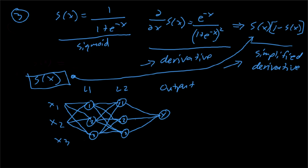So that's the derivation of the sigmoid function, the simplification to the format you typically see in neural networks and machine learning, and exactly why we use the simplified version over the standard derivative. Thanks for watching — don't forget to like, share, and subscribe. Until next time.